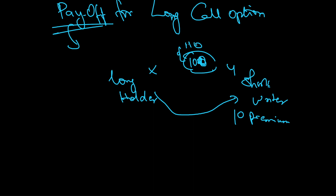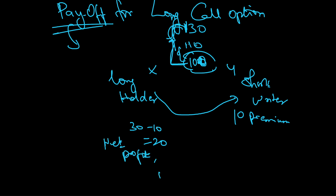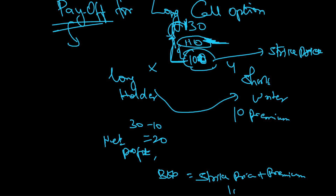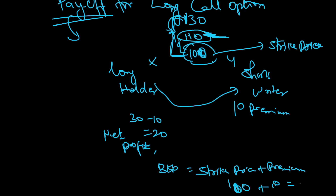Let's say the price goes to 130. When the spot price goes to 130 on the expiry date, the holder makes a net profit of 20 — because from 100 it went to 130, so he makes 30, but he already paid 10 as premium, giving a net profit of 20. The break-even point formula is: strike price (100) plus premium (10) = 110.